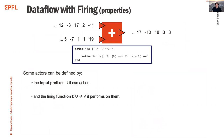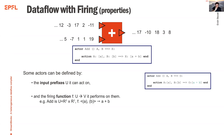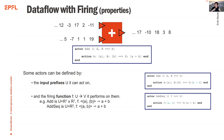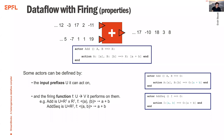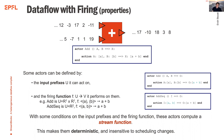Two important properties of dataflow with firing: some actors can be defined by the input prefix they act on, and a firing function maps the input prefix to an output sequence. With certain conditions on the input prefix and firing function, the actor computes a streaming function, meaning it is deterministic regardless of scheduling.